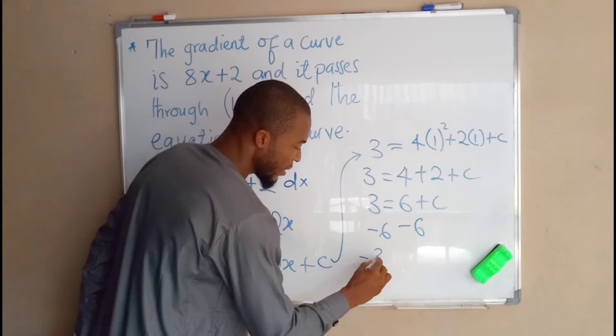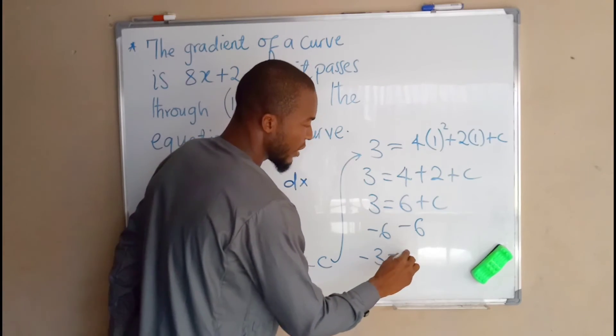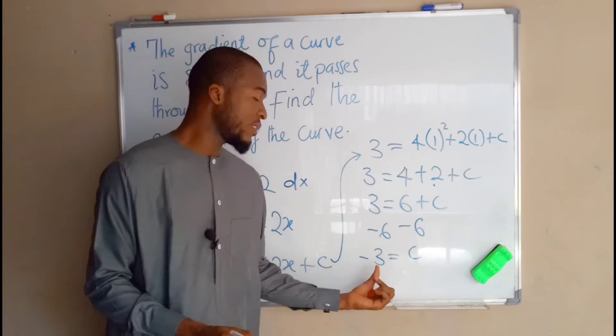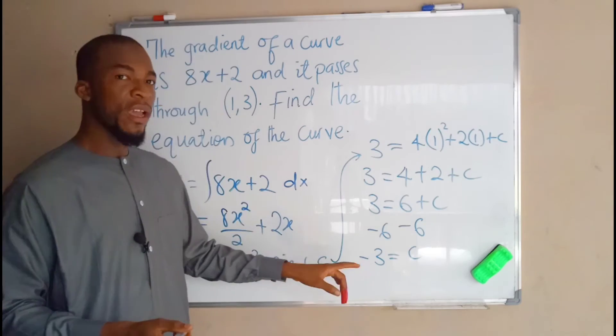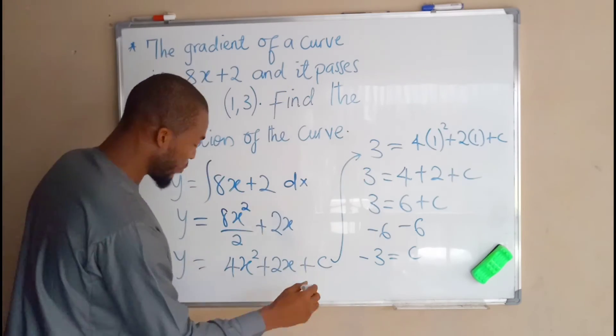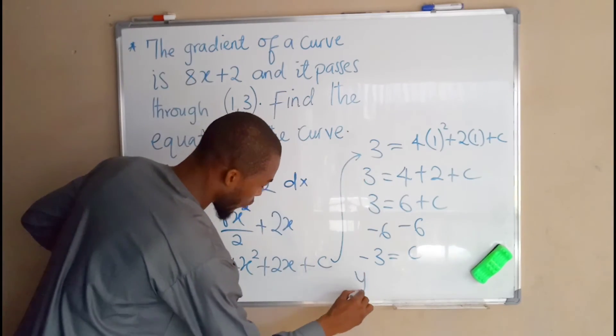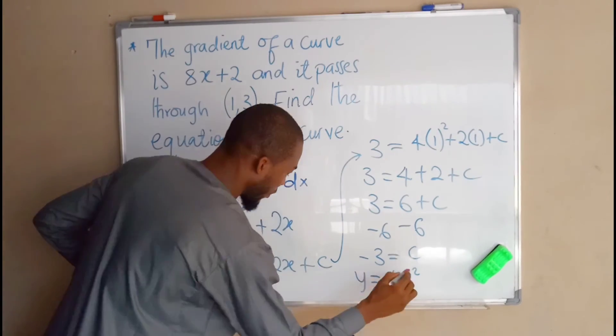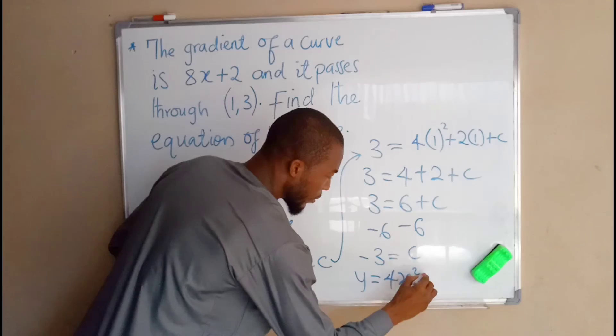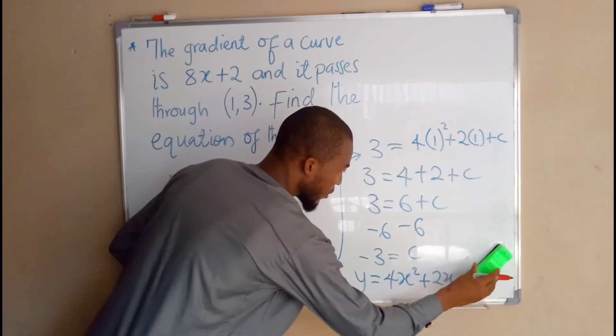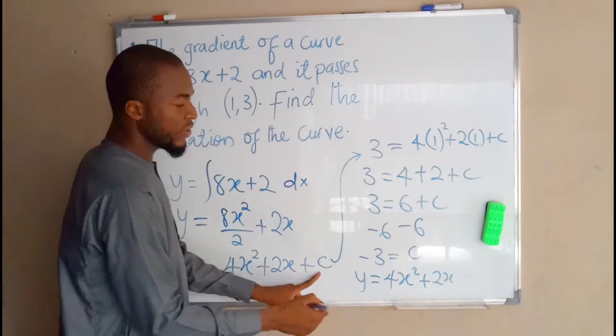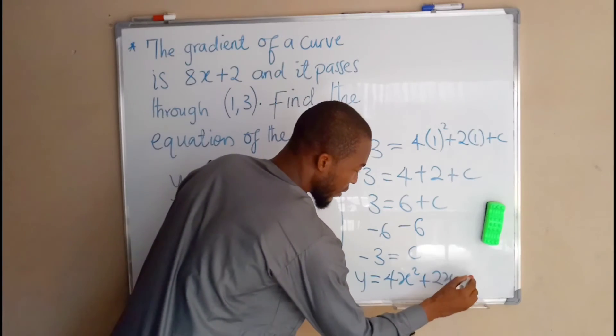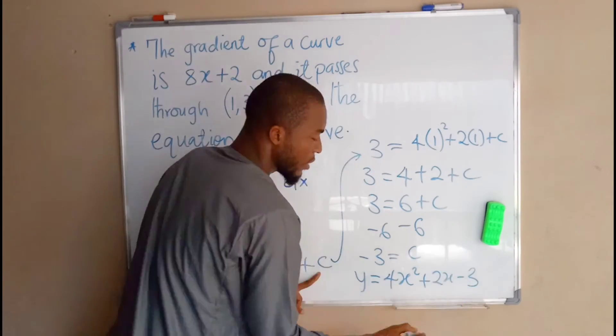Minus 6 from the left hand side, we have negative 3 equals c. Therefore c is equal to negative 3. Therefore the equation of the curve is going to be y equals 4x squared plus 2x plus the constant, which is now equal to negative 3.